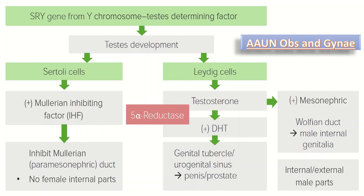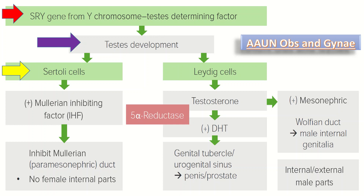In this chart, the SRY gene from the Y chromosome is a testis-determining factor that causes testis development. In the testis we have Sertoli cells and Leydig cells. Sertoli cells release Müllerian inhibiting factor, which inhibits the Müllerian or paramesonephric ducts, so no female internal genitalia are formed. Leydig cells release testosterone, which with the help of 5-alpha reductase is converted into dihydrotestosterone, causing genital tubercle and urogenital sinus formation, resulting in the penis and prostate. Testosterone also causes formation of the mesonephric or Wolffian duct, resulting in male internal genitalia.